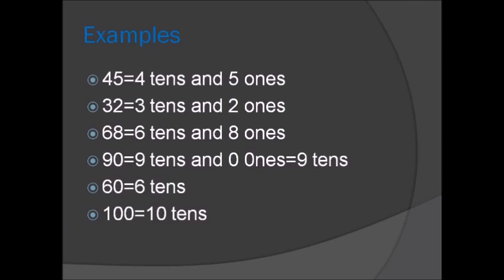Ninety equals nine tens and zero ones, which equals nine tens. Sixty equals six tens. Hundred equals ten tens. Ten tens equals one hundred.